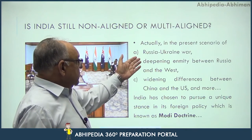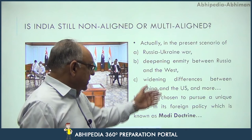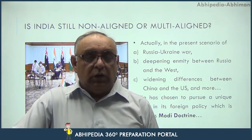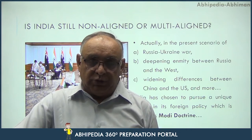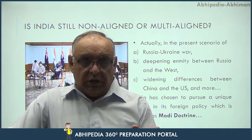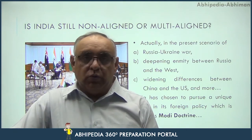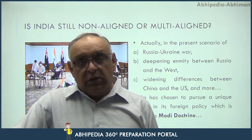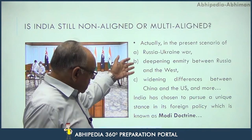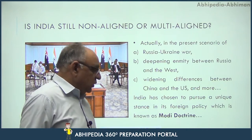In the present scenario of the Russia-Ukraine war, the deepening enmity between Russia and the West, and widening differences between China and the US — the US has become quite active in the Indo-Pacific region. The Quad has been formed, the Indo-Pacific Economic Framework for Prosperity has been formed, Malabar exercises are ongoing, a joint military exercise between India and the US in Uttarakhand is coming in October, and the I2-U2 summit negotiations have also started. In the wake of all this, so many things are happening around India, and India has chosen to pursue a unique stance in its foreign policy known as the Modi Doctrine.